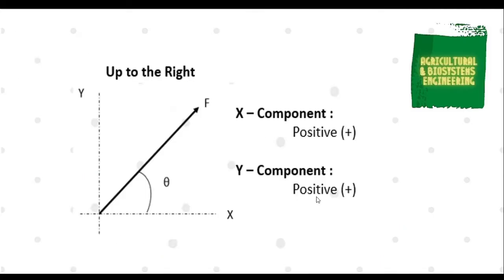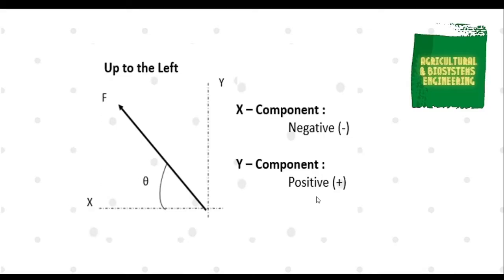We begin with the up-to-the-right direction. If the force is going up to the right, the X component of the force will be positive and the Y component is also positive. Second, the up-to-the-left direction. If the force is going in this direction, its X component is negative while the Y component is positive.